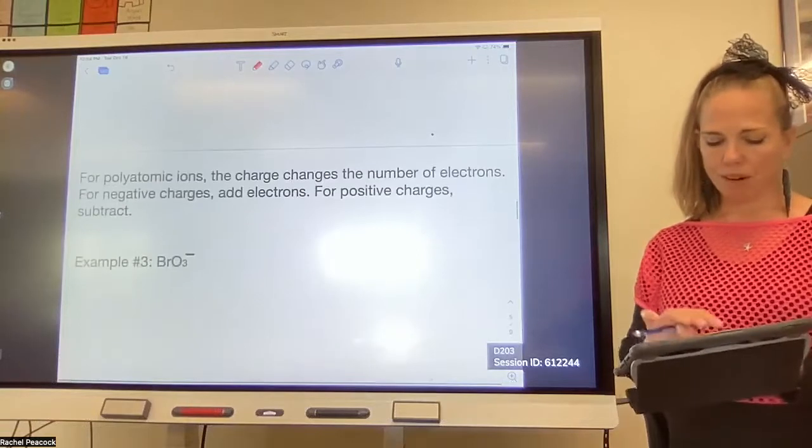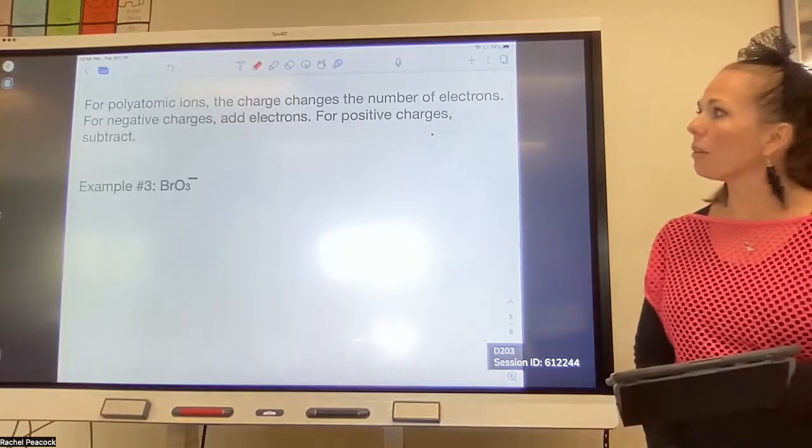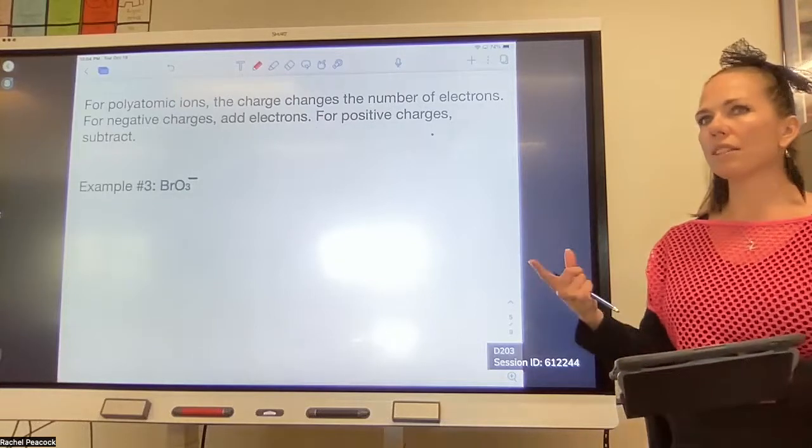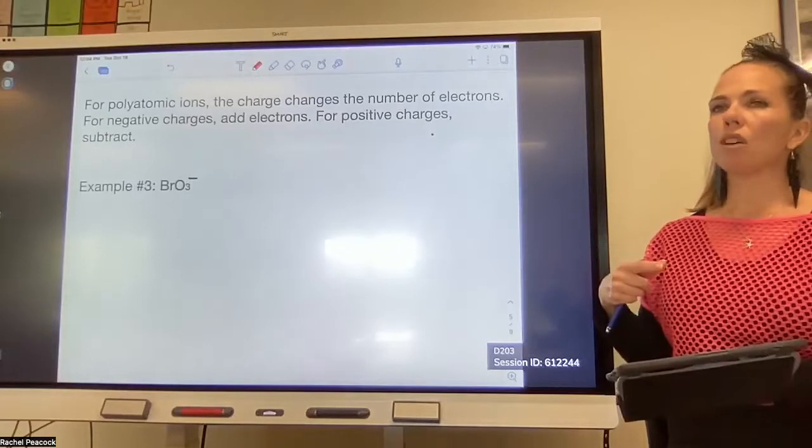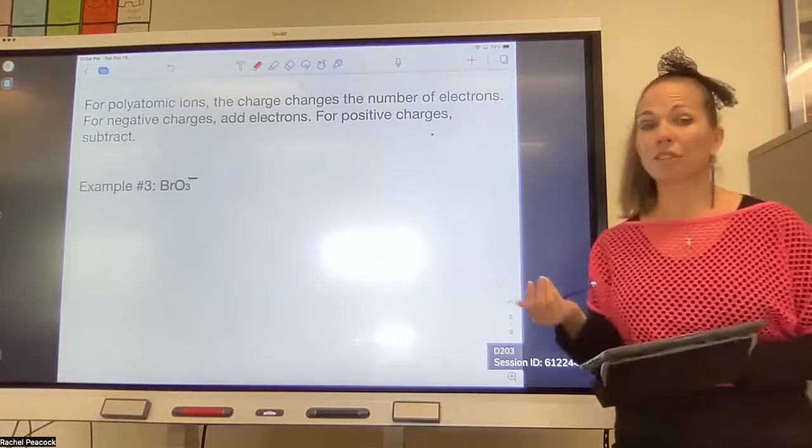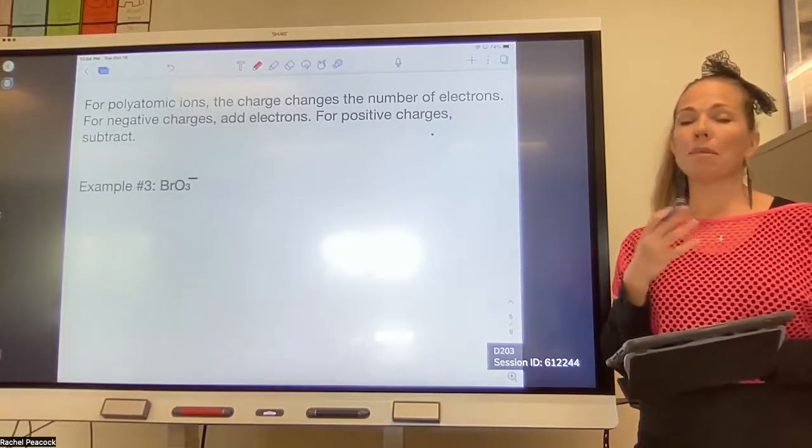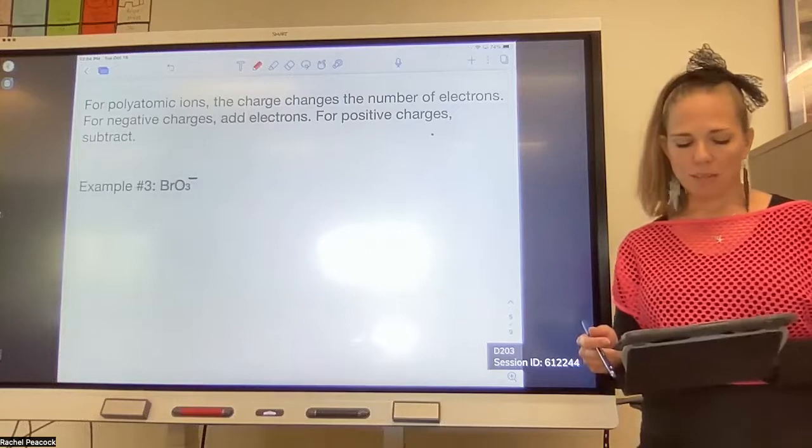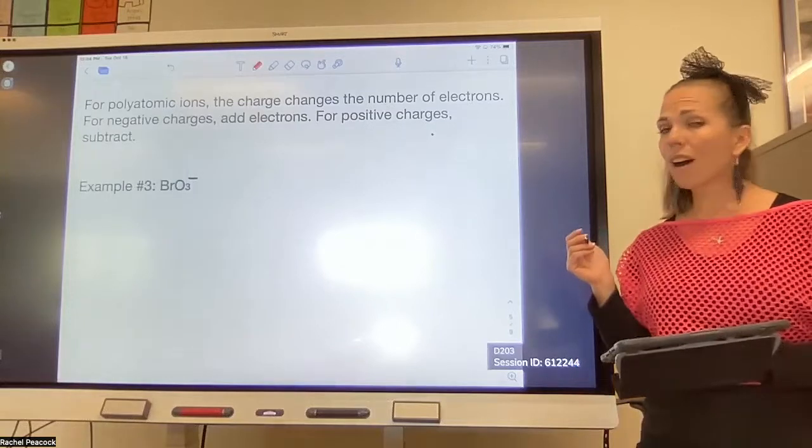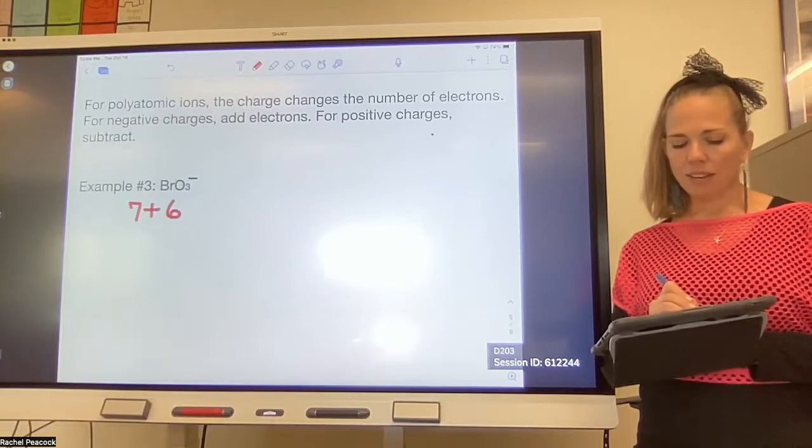All right, I'm going to skip AsBr3. Now for polyatomic ions, the charge has to come into play here. So when there's a charge and that charge is negative, for example, that means that that polyatomic has additional electrons. If the charge is positive, like in the case of ammonium, then that means it's missing an electron that you would expect it to have.